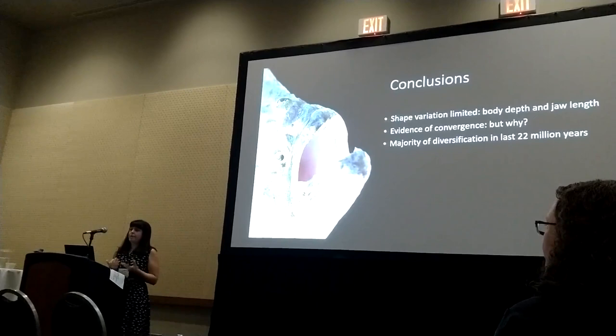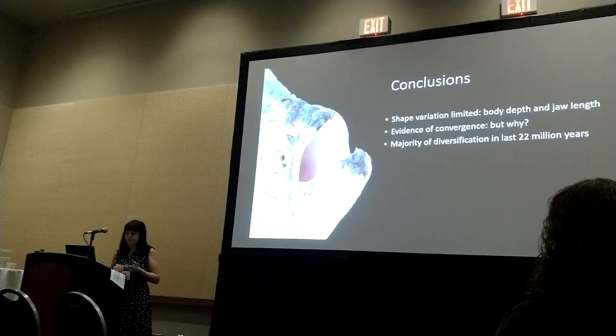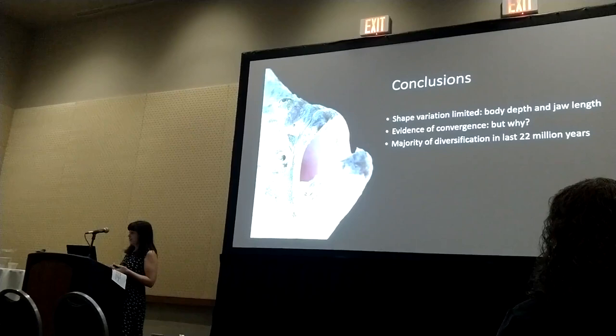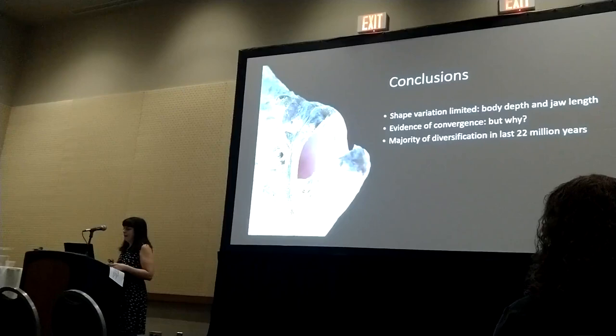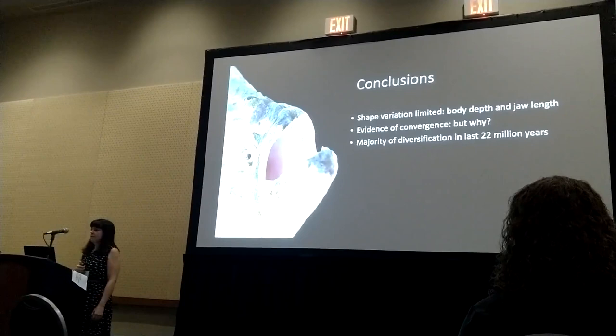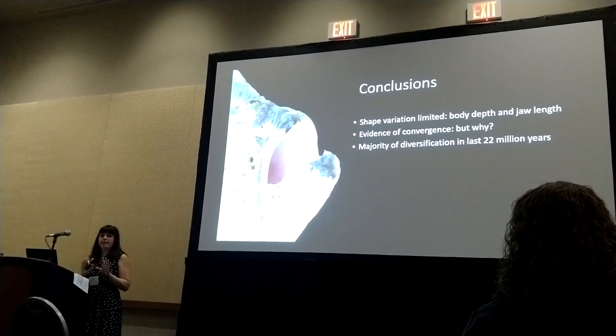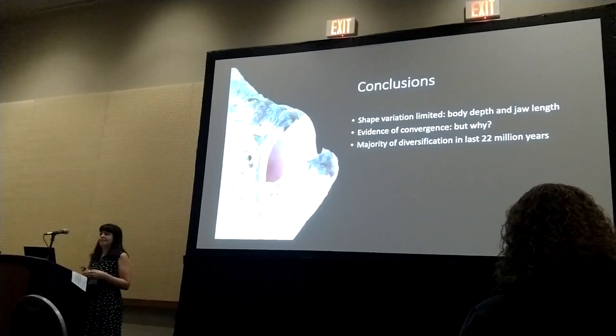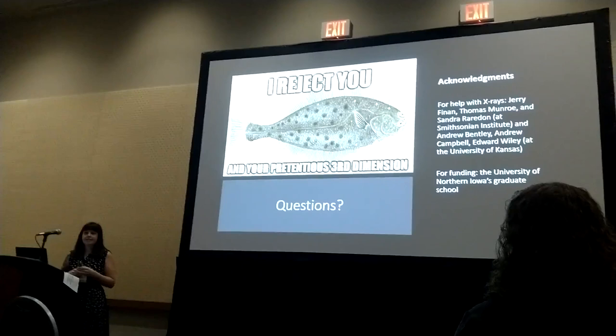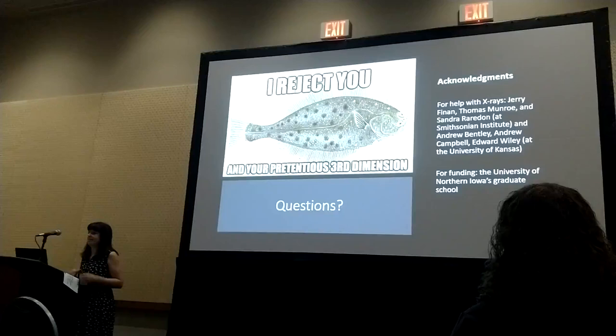In conclusion, our shape variation was really limited to body depth and jaw length. We also saw quite a bit of evidence of convergence, but we really don't know why, because it doesn't seem related to ecology and phylogeny is not really driving shape. We also noticed that early morphology explored the morphospace and then resulted in the majority of diversification in the last 22 million years. I'd like to thank the people at Smithsonian and the University of Kansas for helping with the x-rays, and my funding source.